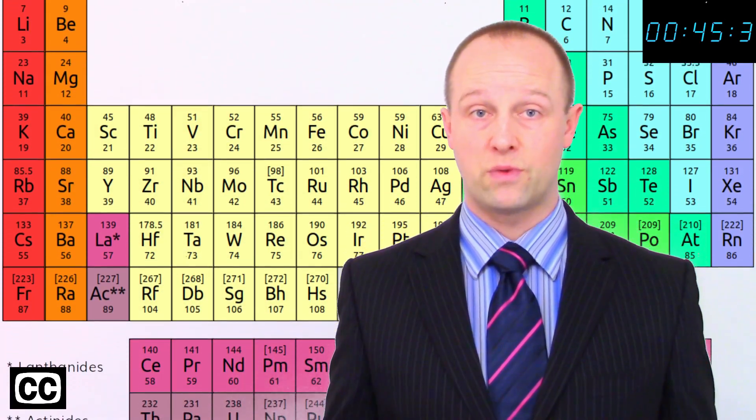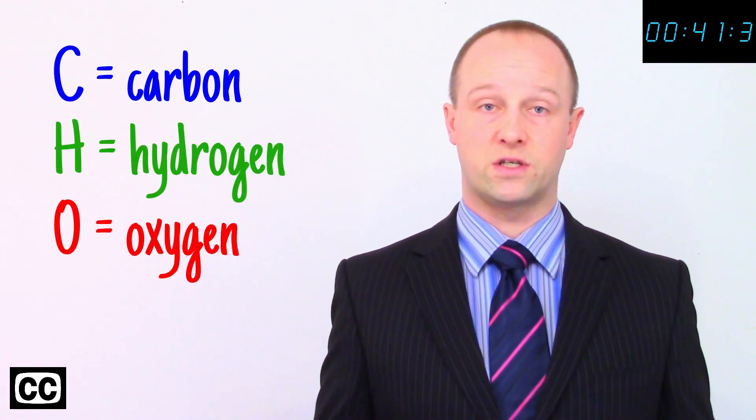We use the symbol entries from the periodic table to represent different elements. Common entries include C for carbon, H for hydrogen, and O for oxygen.